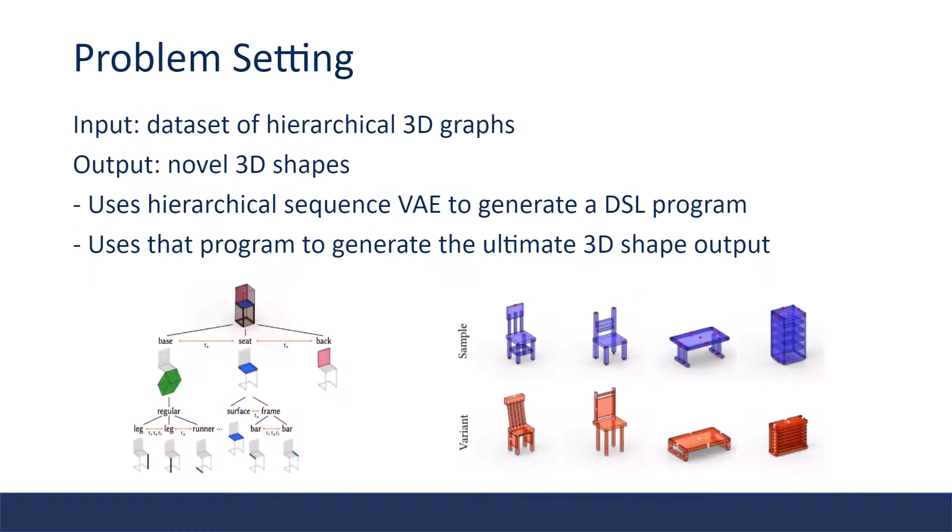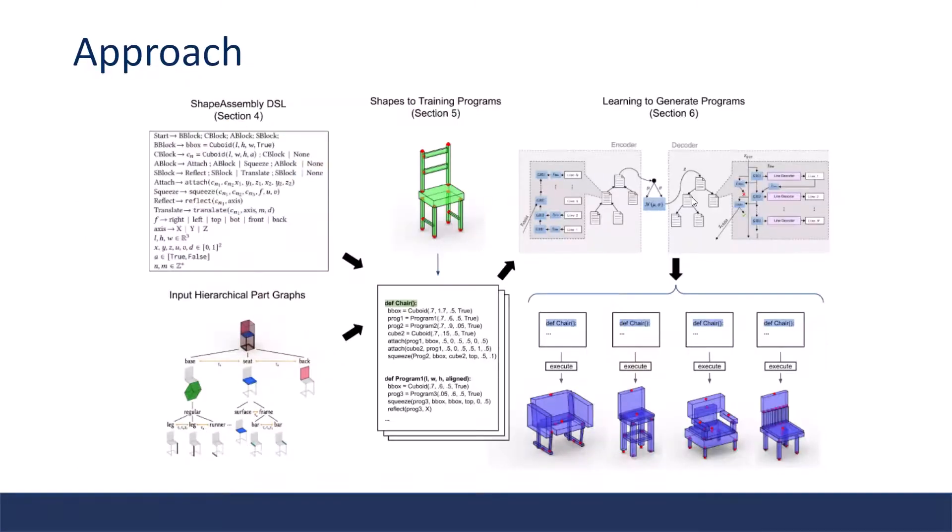The problem setting is that they train a hierarchical sequence variational auto-encoder model to generate the domain-specific language programs that represent novel high-quality 3D shapes. This is the pipeline of the approach.